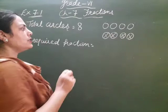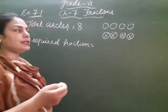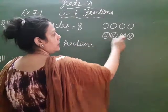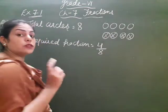So how many circles have cross in them? 1, 2, 3, 4. So what is its fraction? The circles we have taken, they are 4 and total circles are 8. So its fraction is 4 by 8.